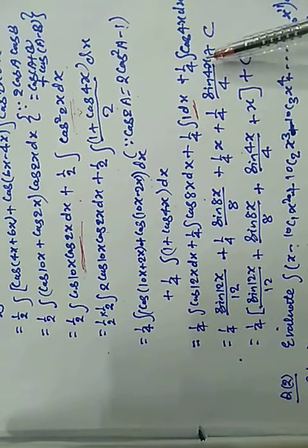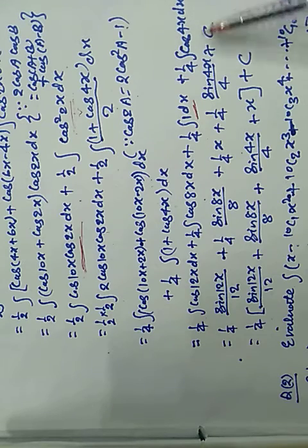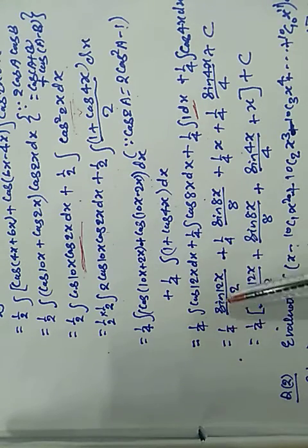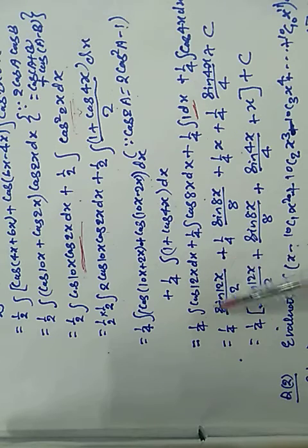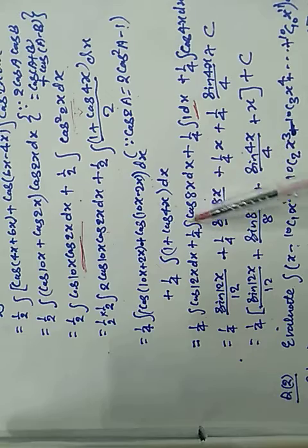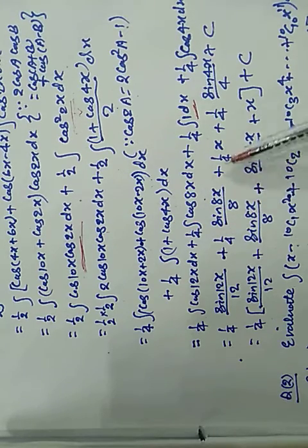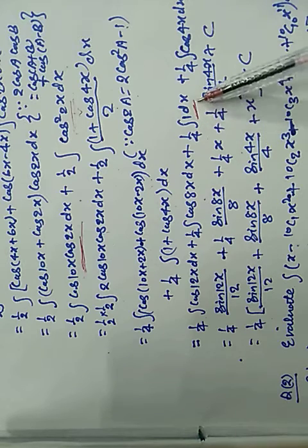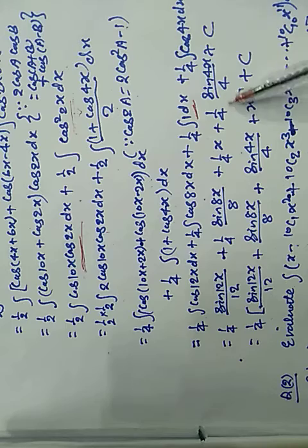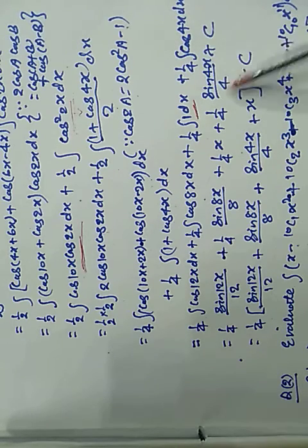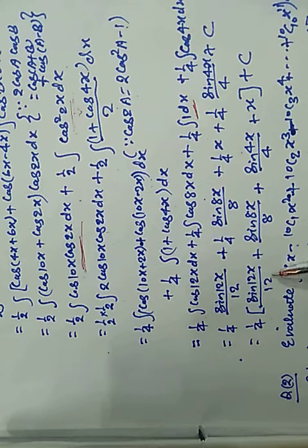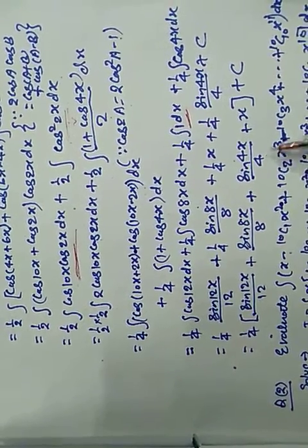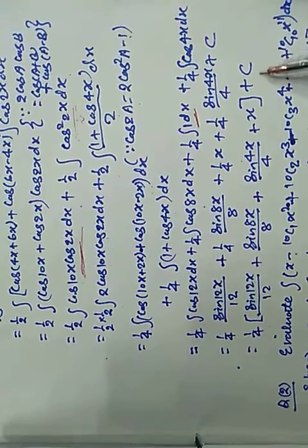Plus 1/4 integration of 1 dx plus 1/4 integration of cos4x dx. This equals 1/4 · sin12x/12 + 1/4 · sin8x/8 + 1/4 · x + 1/4 · sin4x/4 + C. Taking 1/4 common: = 1/4 [sin12x/12 + sin8x/8 + sin4x/4 + x] + C, where C is the constant of integration.